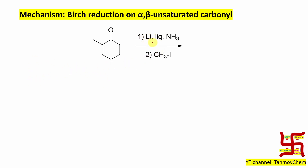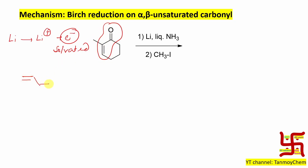Now if you look at this first step — liquid ammonia and lithium — we know that lithium is an alkali metal, so it releases one electron and becomes lithium⁺. Lithium⁺ is very stable because it attains the nearest noble gas electronic configuration, like helium. These electrons — more specifically, solvated electrons — are actually the reducing agent. Now this part has a carbon-oxygen bond and a carbon-carbon double bond. The carbon-oxygen bond is actually more reactive because of bond polarity — it is delta-minus/delta-plus — but also more stable.